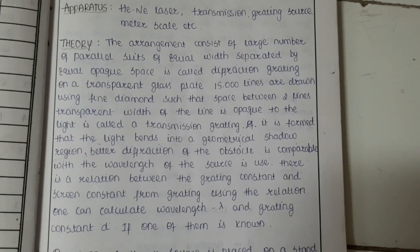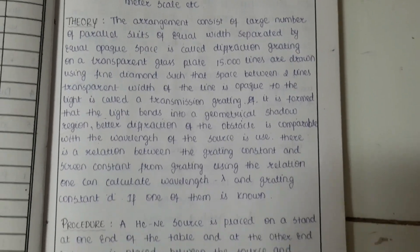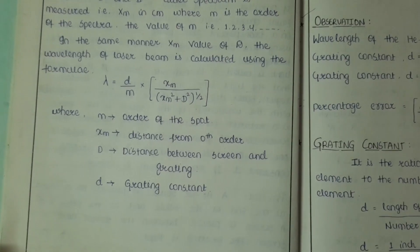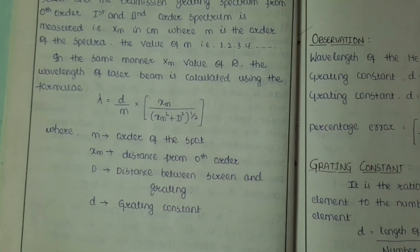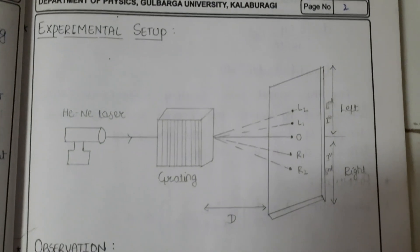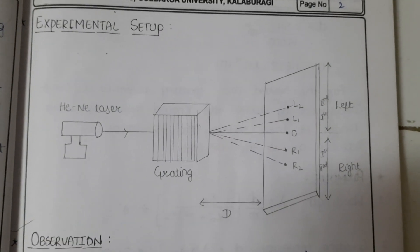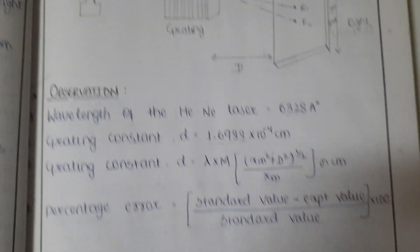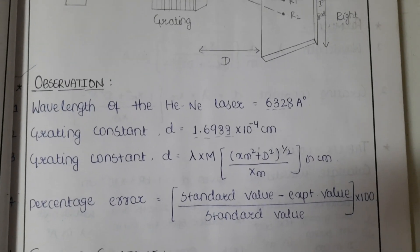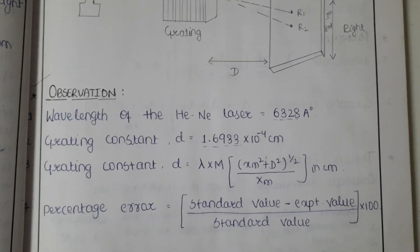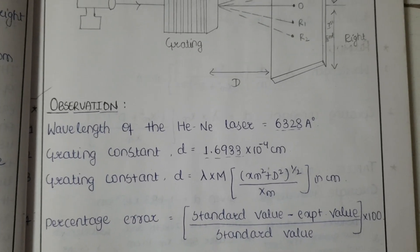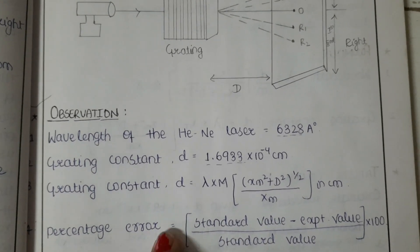Read the theory of diffraction of light. The procedure and formula to calculate wavelength will be explained. This is how the experimental setup looks: laser, grating, and screen. In the observations, first note the wavelength of a helium-neon laser as 6328 Ångström, and the grating constant d as 1.6933 × 10⁻⁴ centimeter.